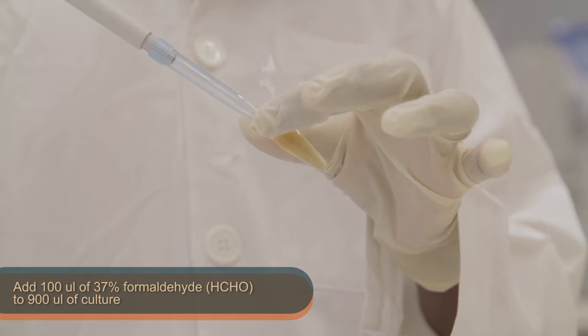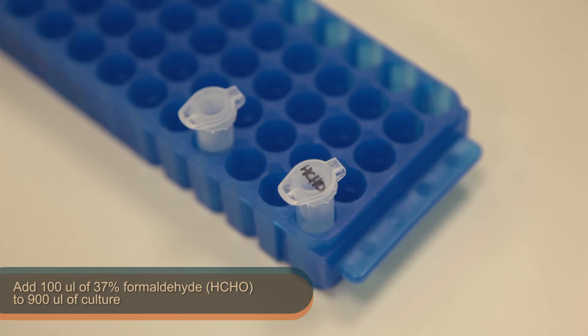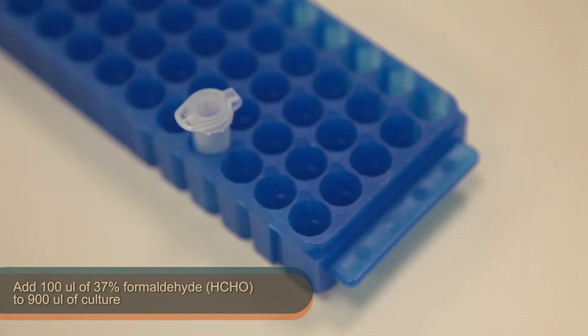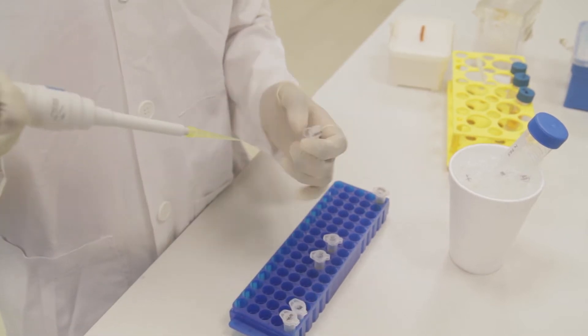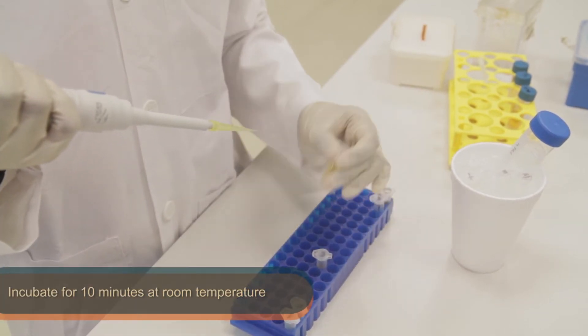Firstly, add 100 µl of 37% formaldehyde to 900 µl of culture and incubate at room temperature for 10 minutes.